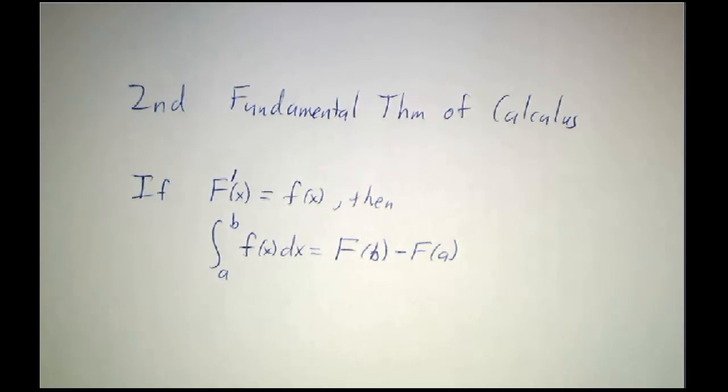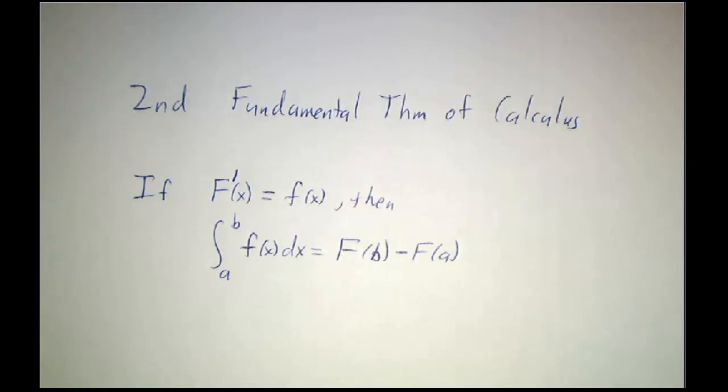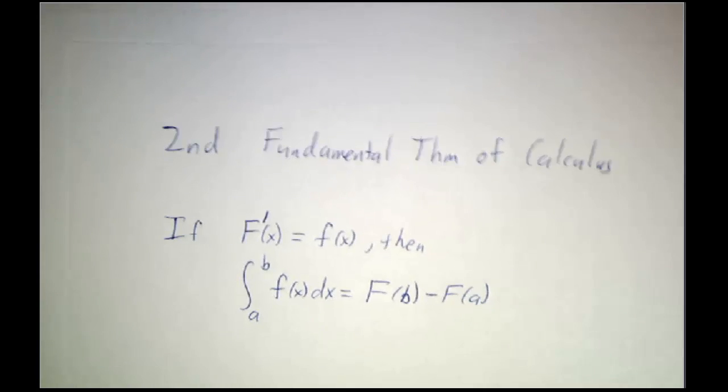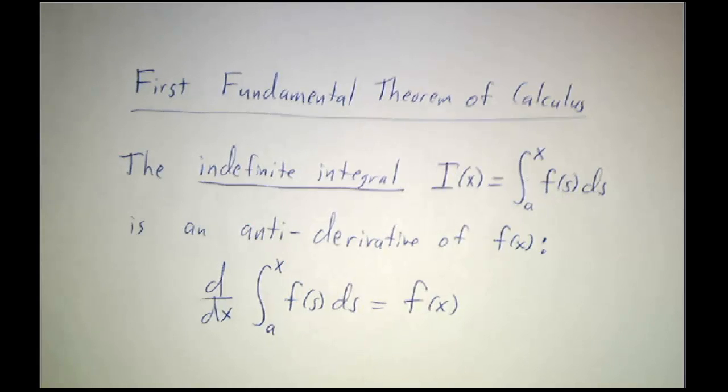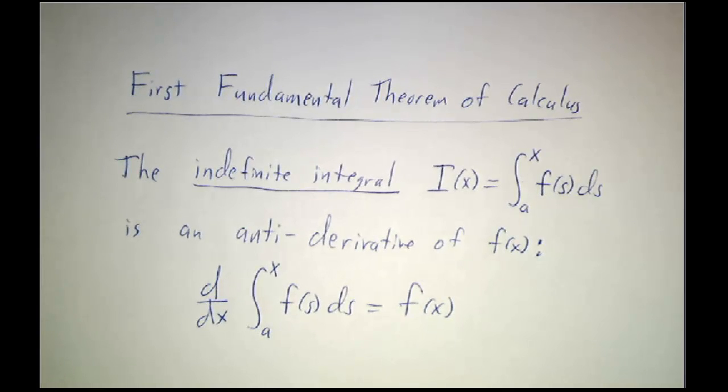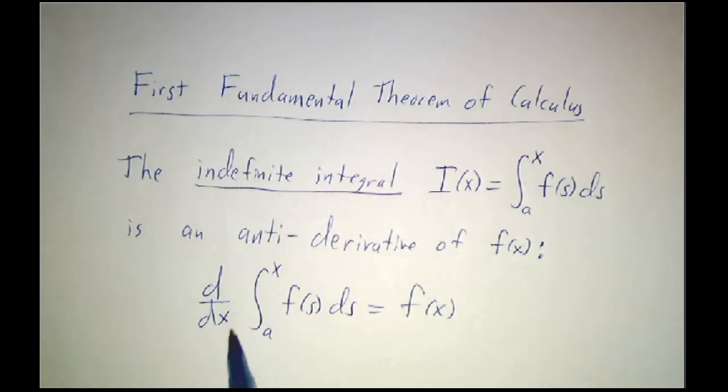But that brings up the question, how do you know that there is an antiderivative? And if there is, how can you find it? So that brings us to the first fundamental theorem of calculus. The first fundamental theorem of calculus says that every continuous function has an antiderivative. And in fact, the indefinite integral is that antiderivative. So it says, if you compute the indefinite integral and then take the derivative of the indefinite integral, you get back the original function.